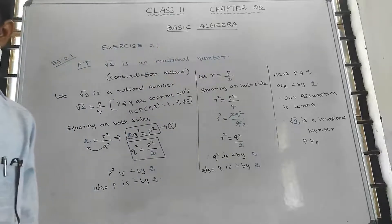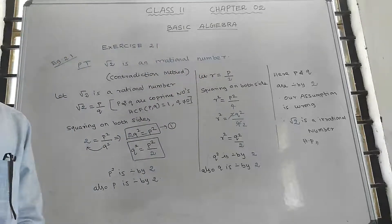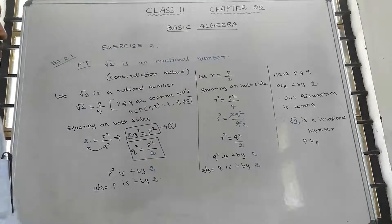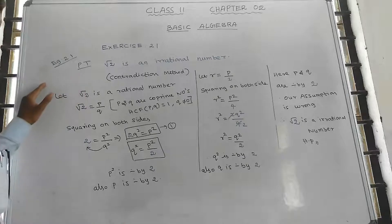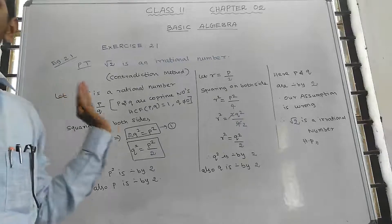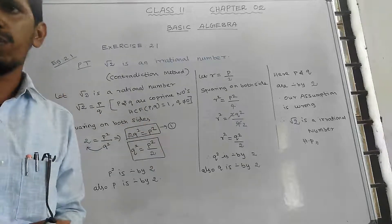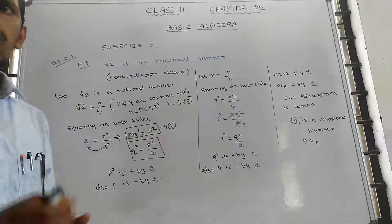Root 2 is an irrational number — we need to prove it. In exercise 2.1, question 2 is on root 3, and the approach will be the same.